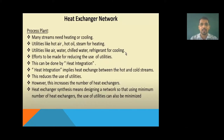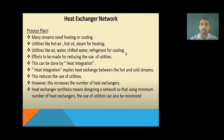For better understanding, consider one process plant where many streams need heating or cooling — there are lots of streams which require external heating and cooling. Utilities like hot air, hot oil, or steam are generally used for heating purposes. Utilities like air, water, chilled water, and refrigerant are generally used for cooling purposes. I want to minimize these utilities and also minimize the utility cost.